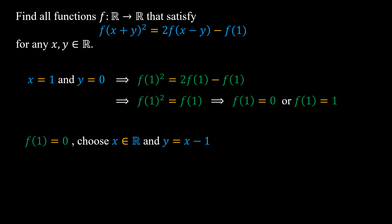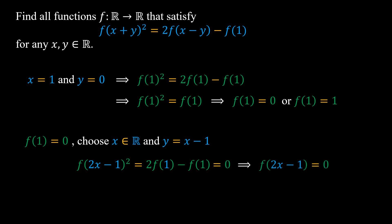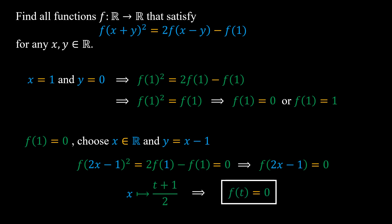In case f(1) equals zero, we can choose x as any real number and y equal to x minus 1. So we have f((2x-1)²) equals f(1) minus f(1), which equals 0. So f(2x-1) equals 0. By replacing x with (t+1)/2, we have f(t) equals 0 for any real number t. And of course this function satisfies the functional equation.